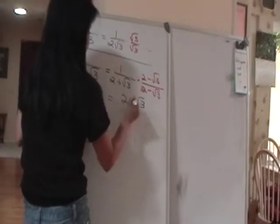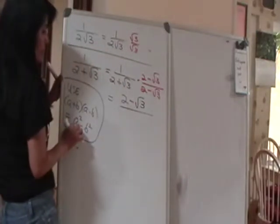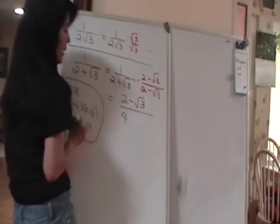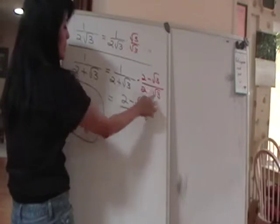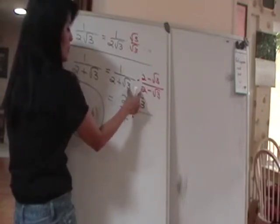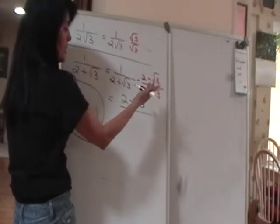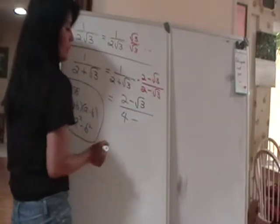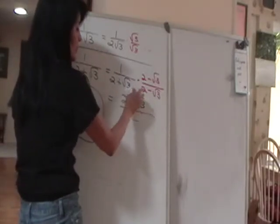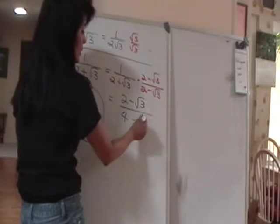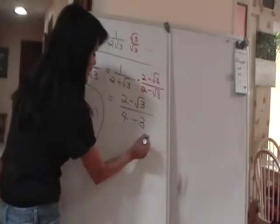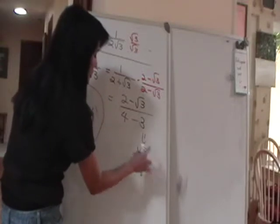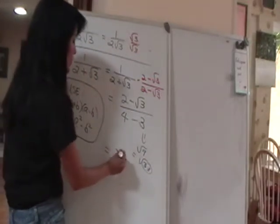In the denominator, applying this formula — or if you prefer, just FOIL slowly — you get 2 times 2 is 4. Then this term times that gives negative 2 square root of 3, and this term times that gives positive 2 square root of 3; those two terms cancel out. For the last terms, positive times negative is negative, and square root of 3 times square root of 3 is square root of 9. Since 9 is 3 times 3, for a square root we need two of the same factor, so one 3 comes out.